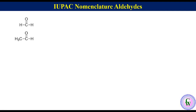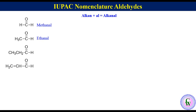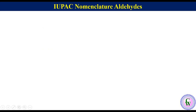Now let's go through examples. We will start with very simple aldehydes containing one and two carbon atoms. These are simply named as alkane + 'al' = alkanal. So the IUPAC name of the one-carbon aldehyde is methanal, and that of the two-carbon aldehyde is ethanal. Three-carbon aldehydes may contain alkyl, alkenyl, or alkynyl groups, and are respectively named as propanal, propenal, and propynal.